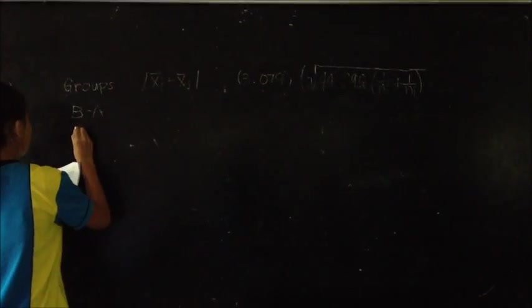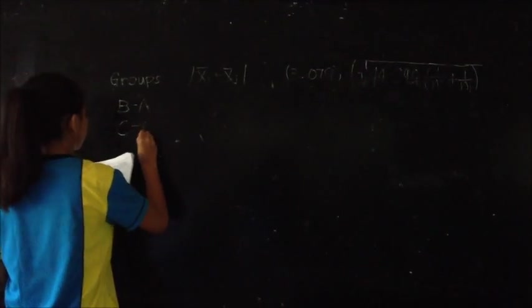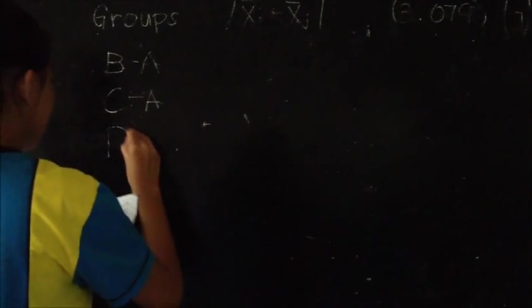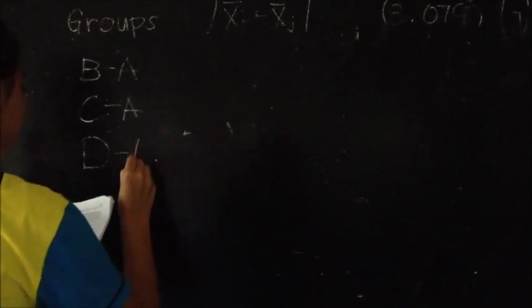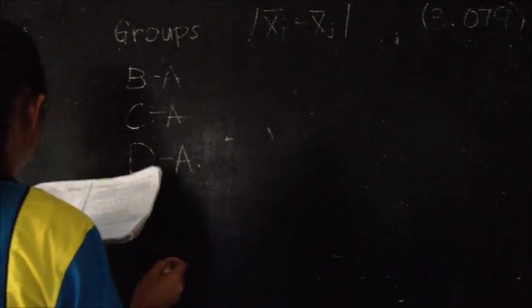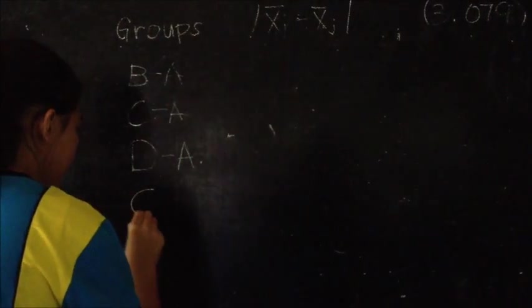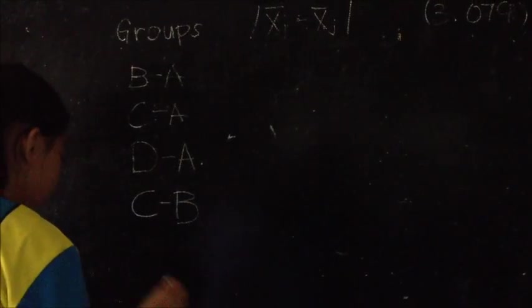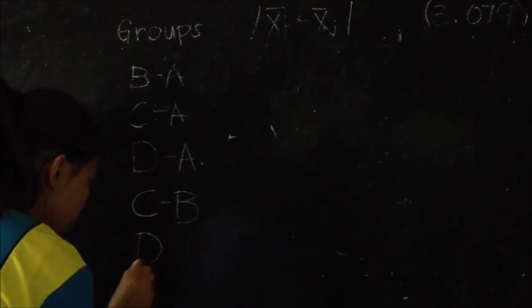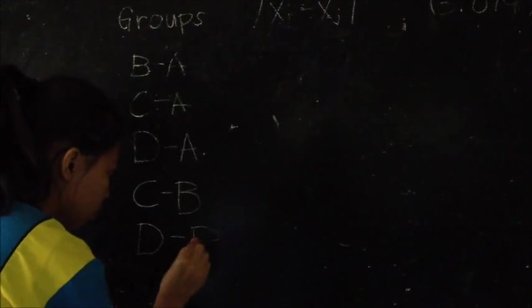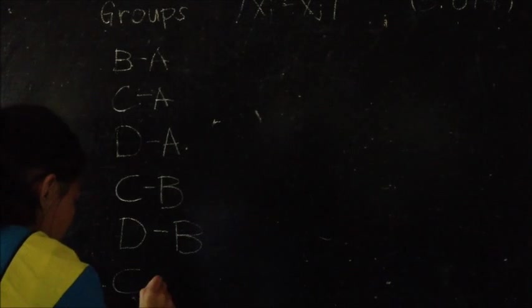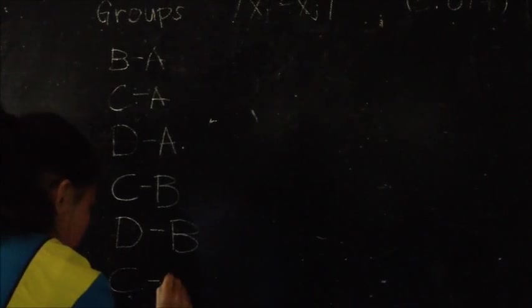The first step to using the Scheffe procedure involves calculating the differences in all pairs of means. Absolute value of the difference of every pair's means is calculated.